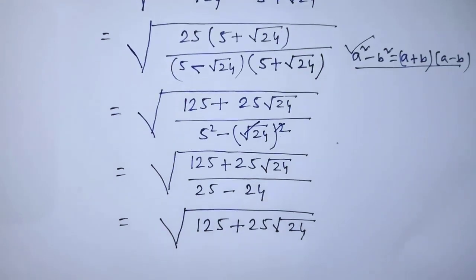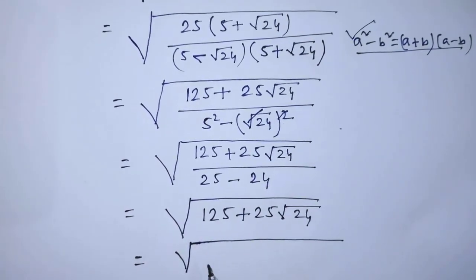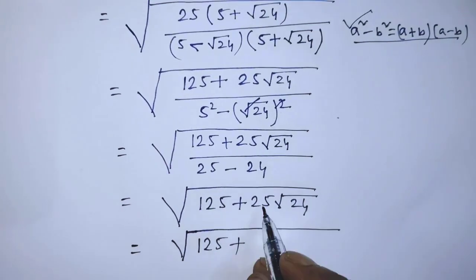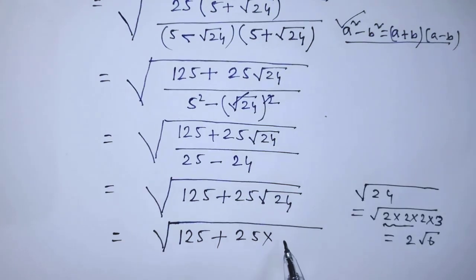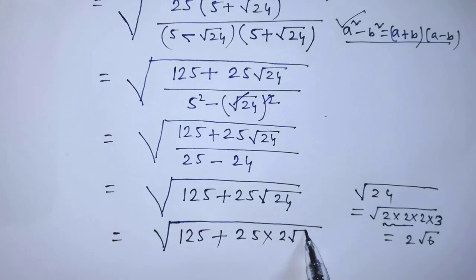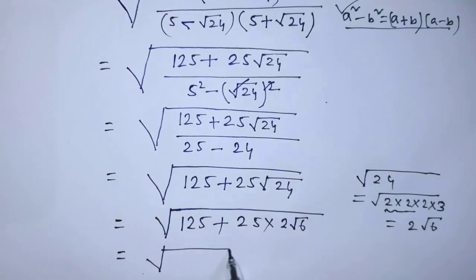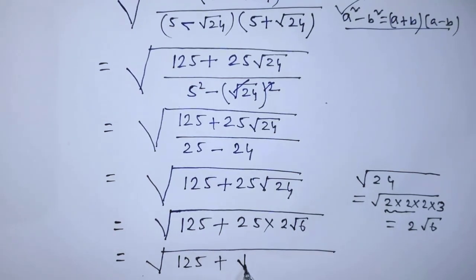We again write the square root of 125 plus 25 times square root of 24. Now, 25 times square root of 24 can be written as 25 times 2 times square root of 6, which equals square root of 125 plus square root of 25 squared times 2 times square root of 6.